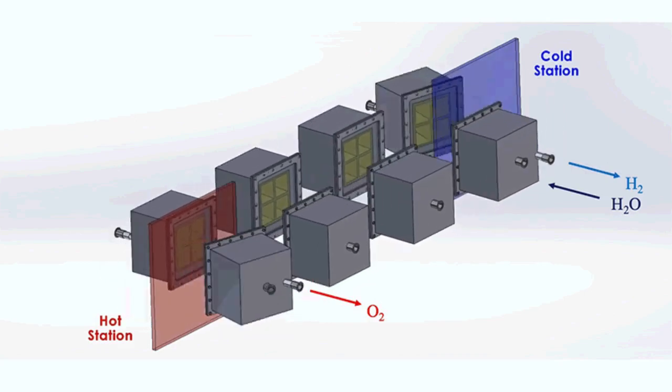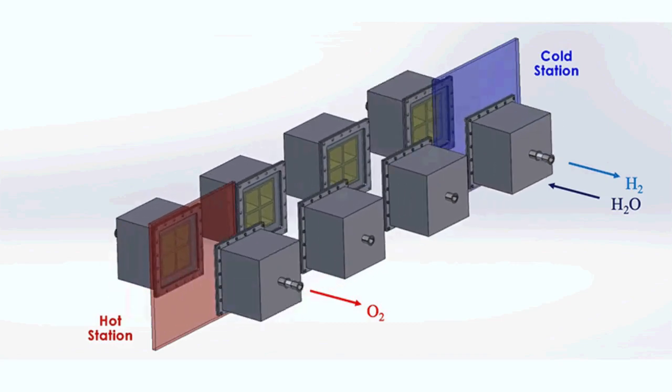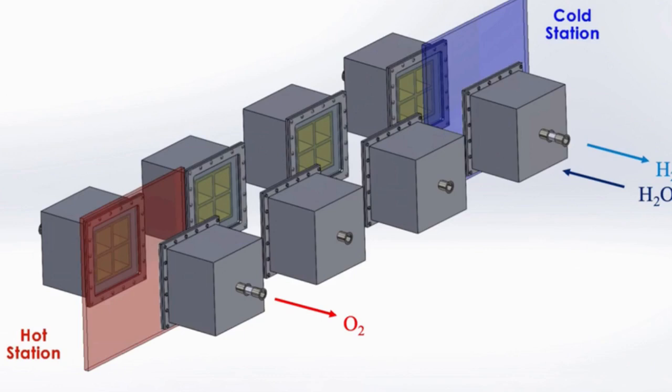Today, hydrogen is largely produced through processes that involve natural gas and other fossil fuels, making the otherwise green fuel more of a grey energy source when considered from the start of its production to its end use.